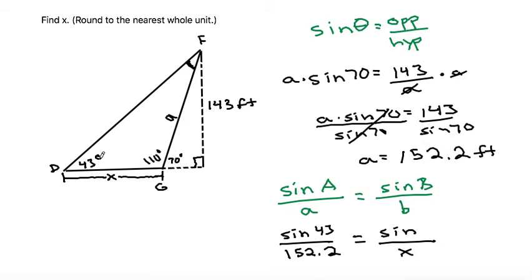We also know that the interior angles of a triangle have to add up to 180. So this angle plus the 110 plus the 43 will have to add up to 180. So if I grab my calculator and I do 180 minus the 43 minus the 110, that gives me 27.